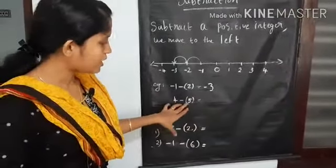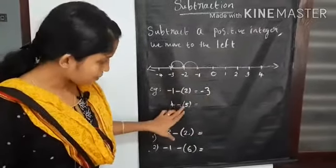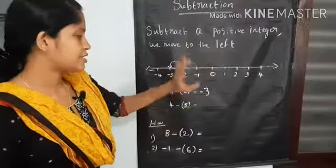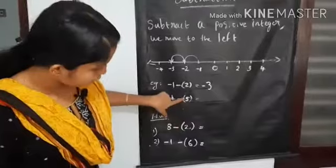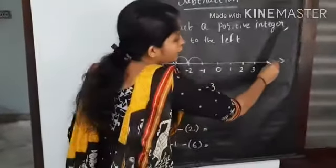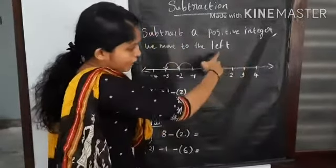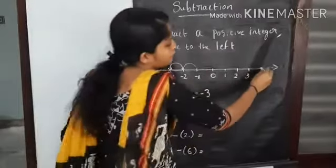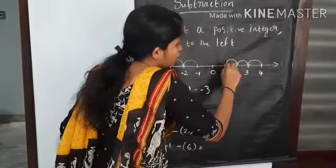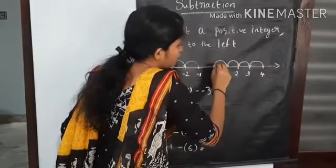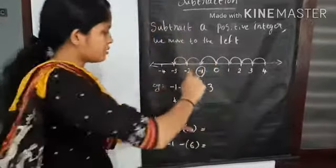Let's see another example: 4 minus 5. Here I took the number 4. I am going to subtract a positive integer — the positive integer is 5. From 4, we have to move to the left side. How many places? 5 places. 1, 2, 3, 4 and 5. The answer is minus 1.